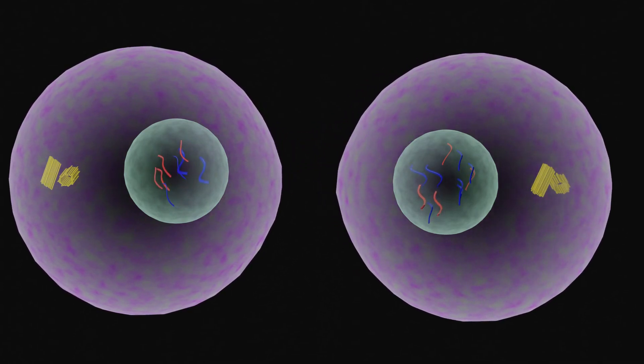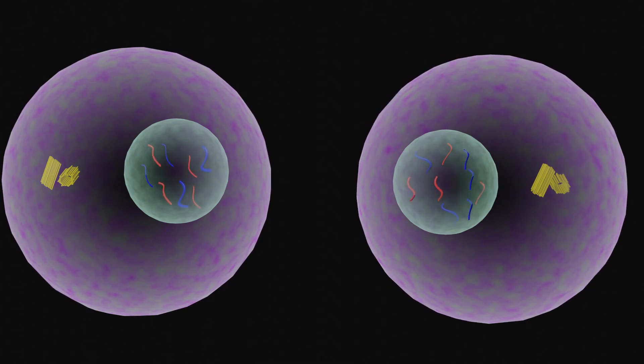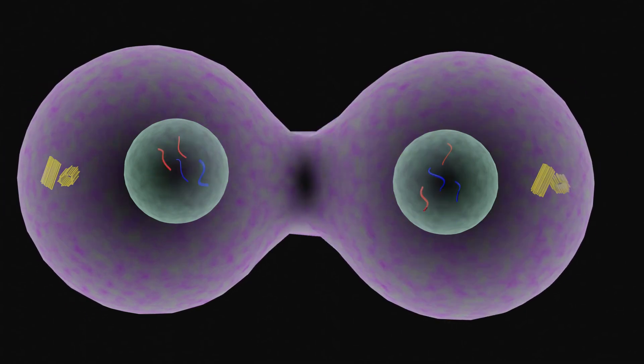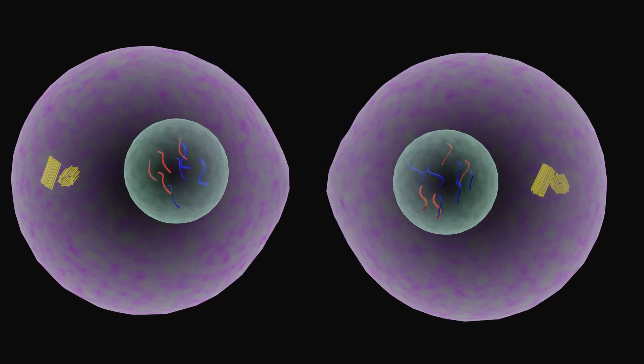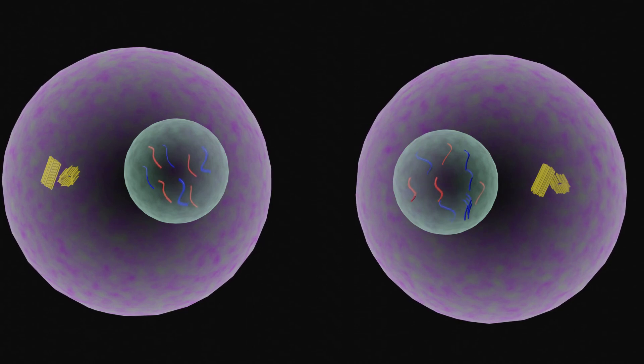Cytokinesis, which is division of the cell contents, takes place. The chromosomes begin to decondense and return to their stringy form. When cytokinesis finishes, we end up with two new cells, each with a complete set of chromosomes identical to those of the mother cell.